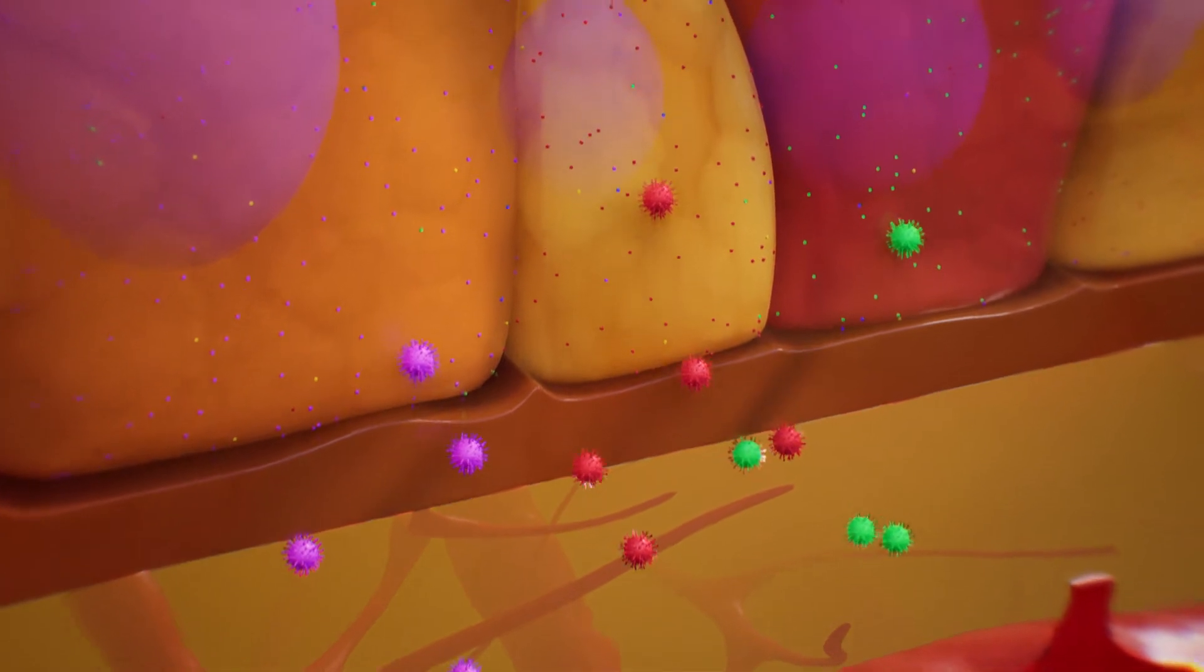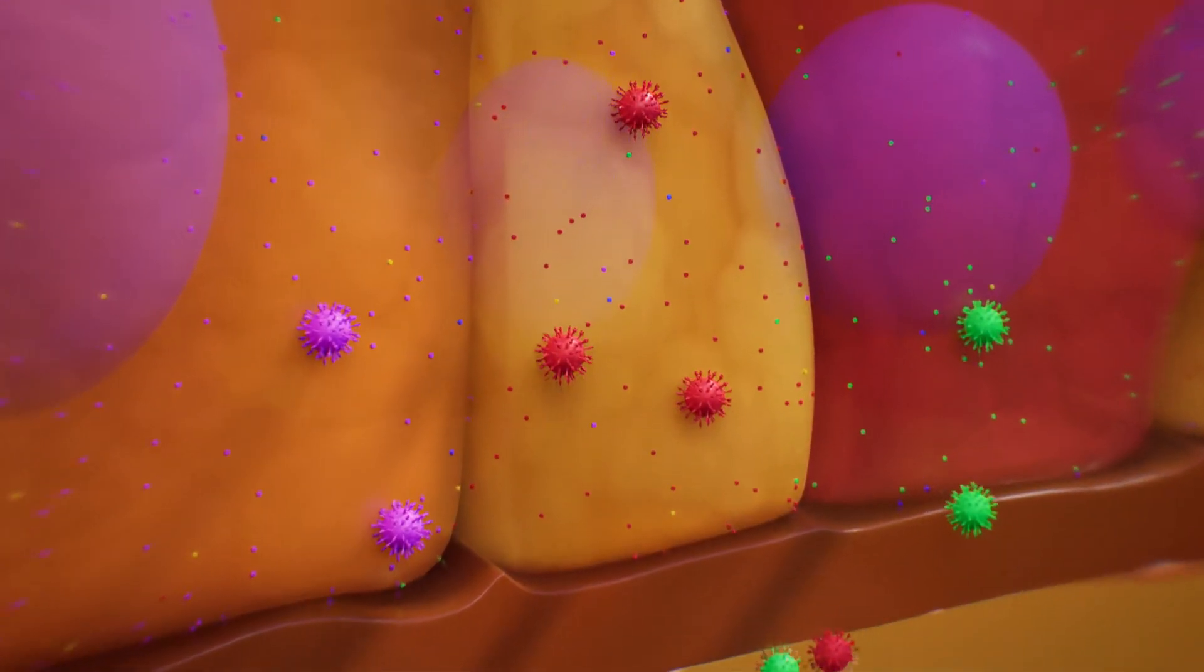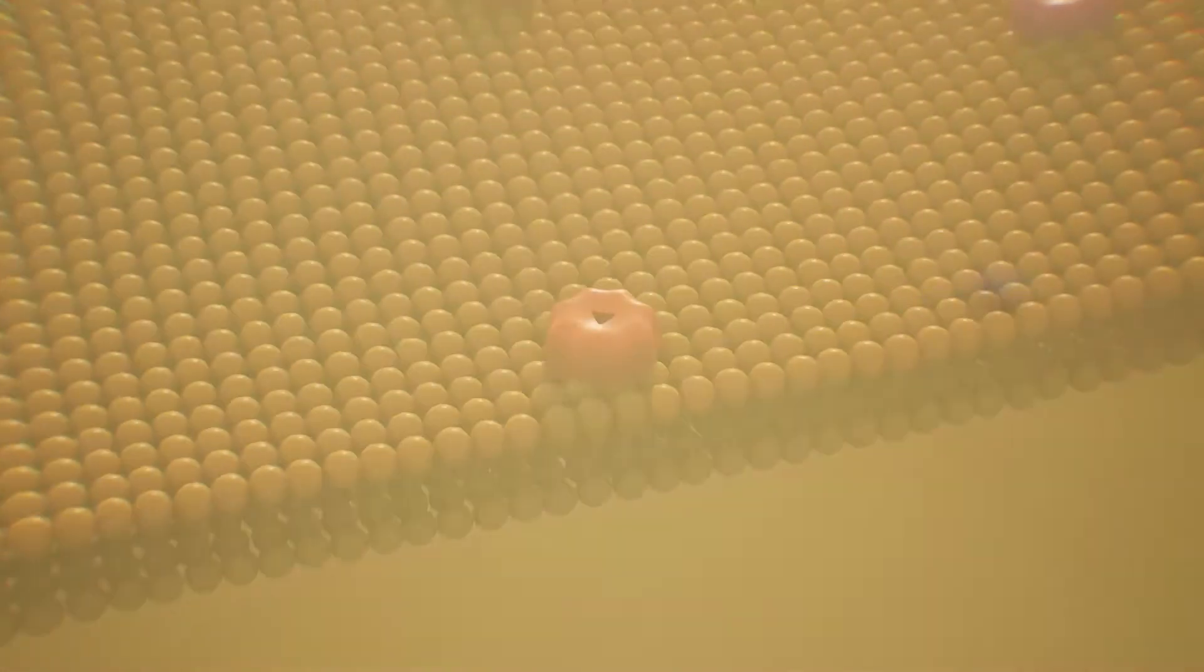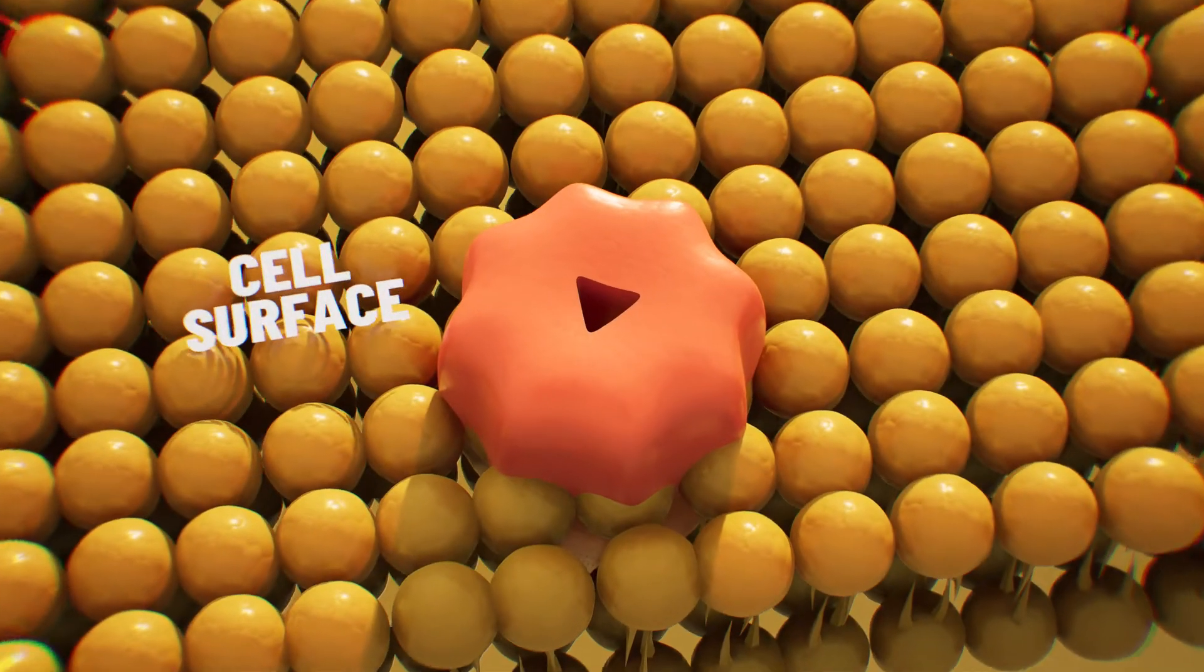Once through these barriers, genetic therapies still need to target specific types of cells in order to have the desired impact. One way to do this is by using cell surface receptors.